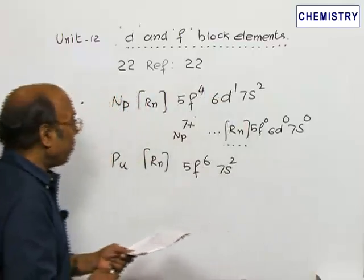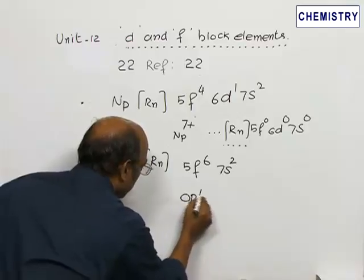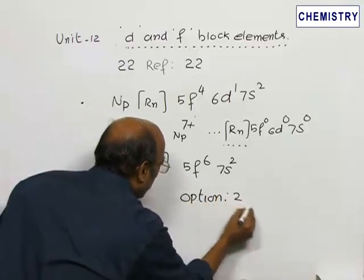So +7 is shown by plutonium and neptunium. Statements B and D are correct, therefore option 2 is the answer.